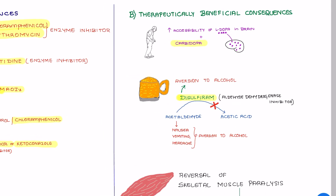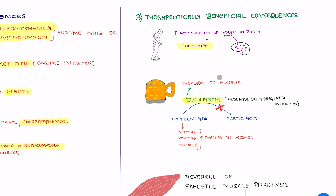Moving on to therapeutically beneficial consequences. The first example is combining carbidopa with levodopa, which is used in the treatment of Parkinsonism. Carbidopa is a peripheral decarboxylase inhibitor. If you give L-dopa alone, it gets metabolized peripherally with the help of the peripheral decarboxylase enzyme. To prevent peripheral metabolism of L-dopa, you combine it with carbidopa, which increases the concentration and accessibility of L-dopa into the brain, allowing you to reduce the dose of L-dopa.